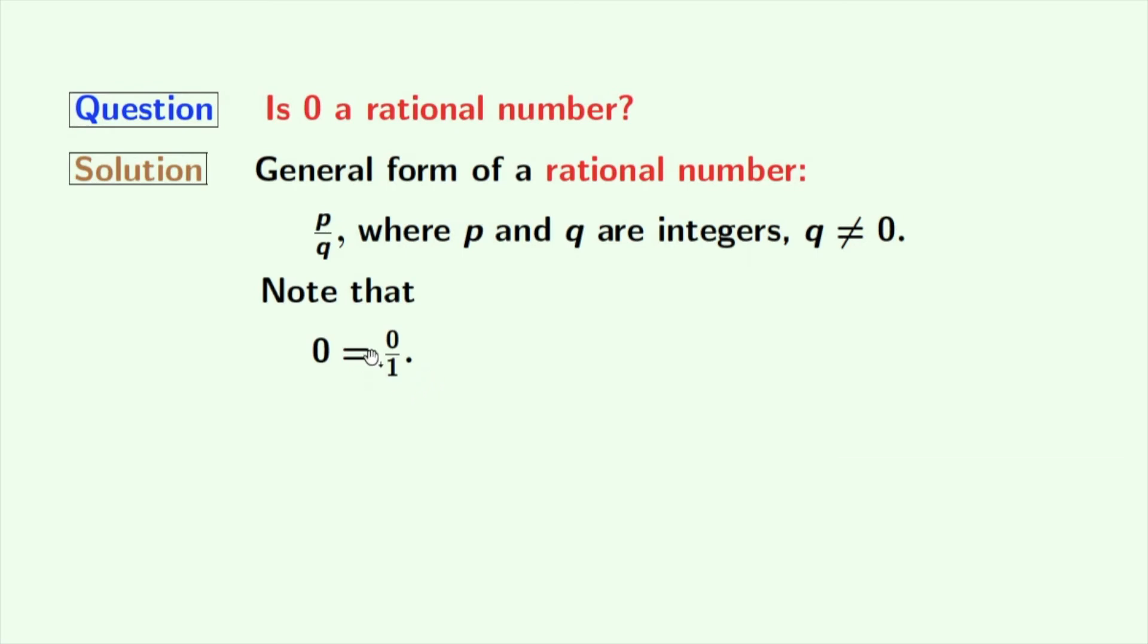If we compare zero by one with P by Q, then we have P equal to zero and Q equal to one.